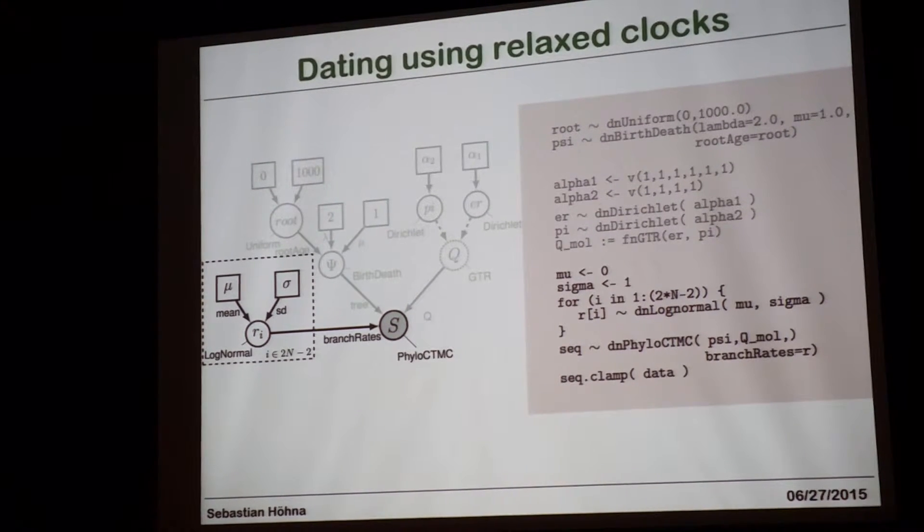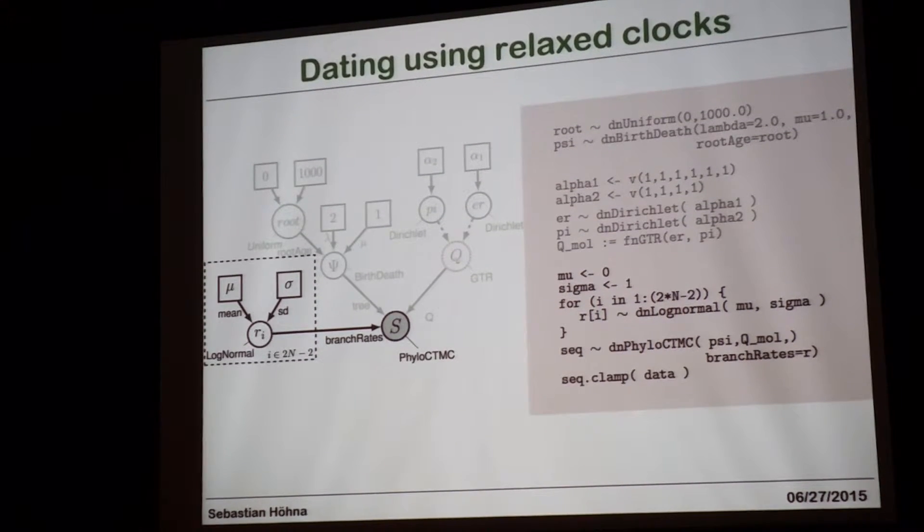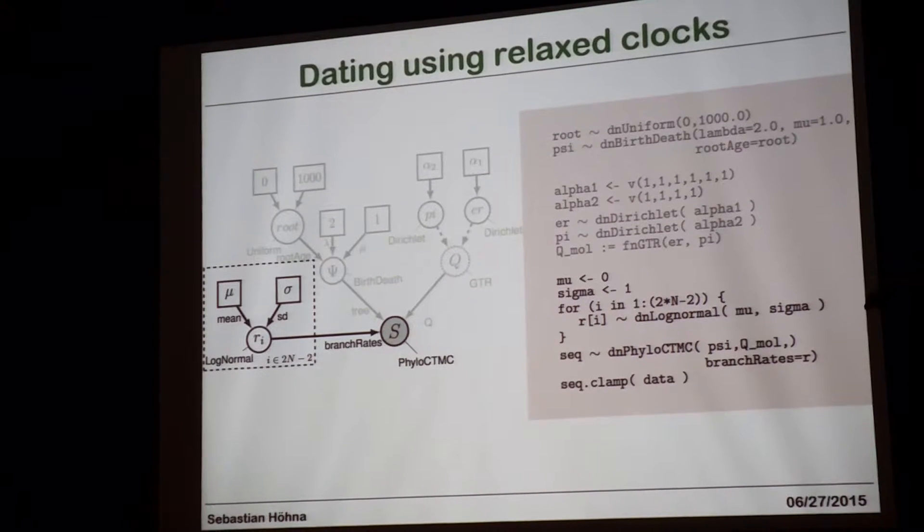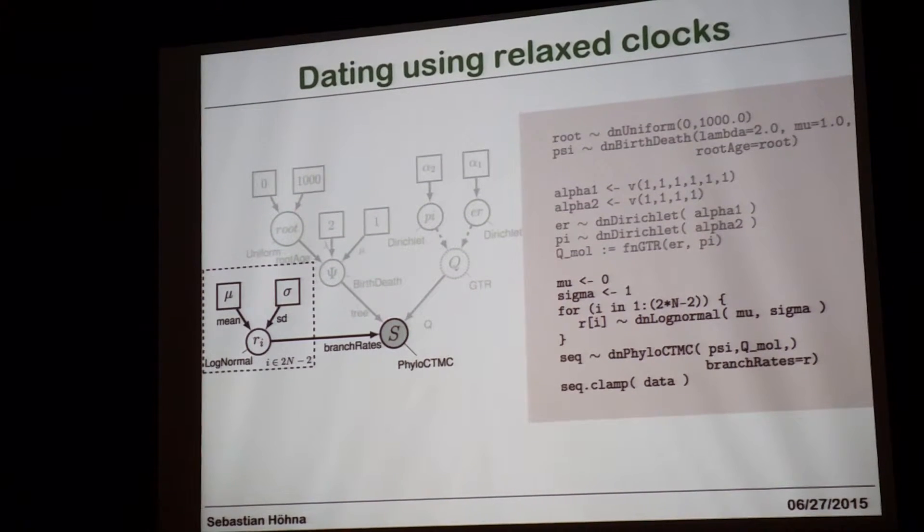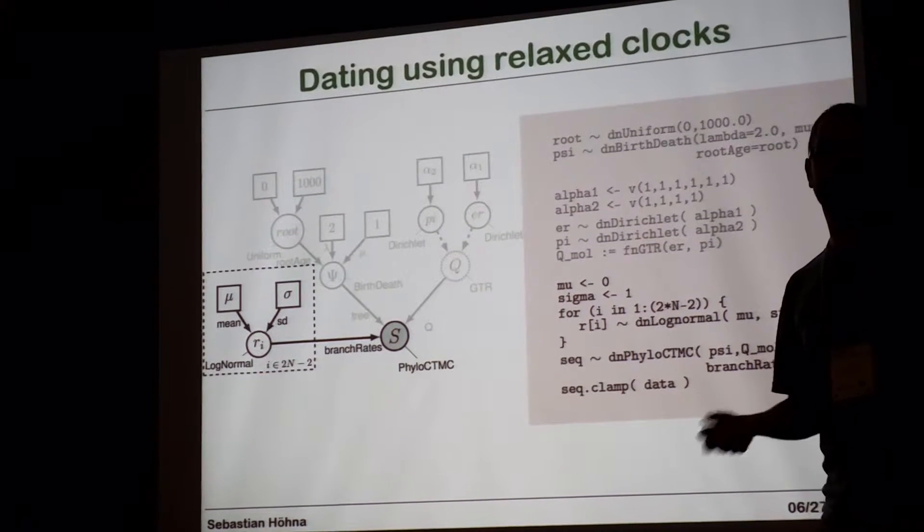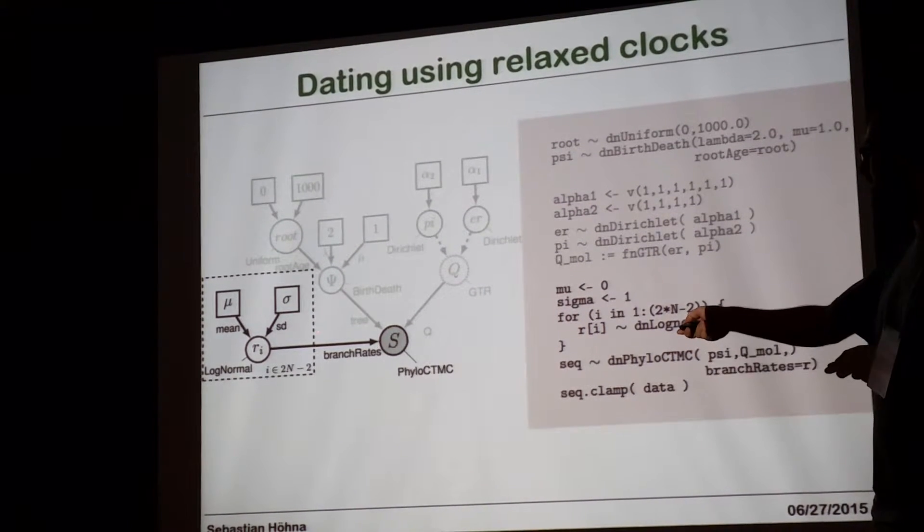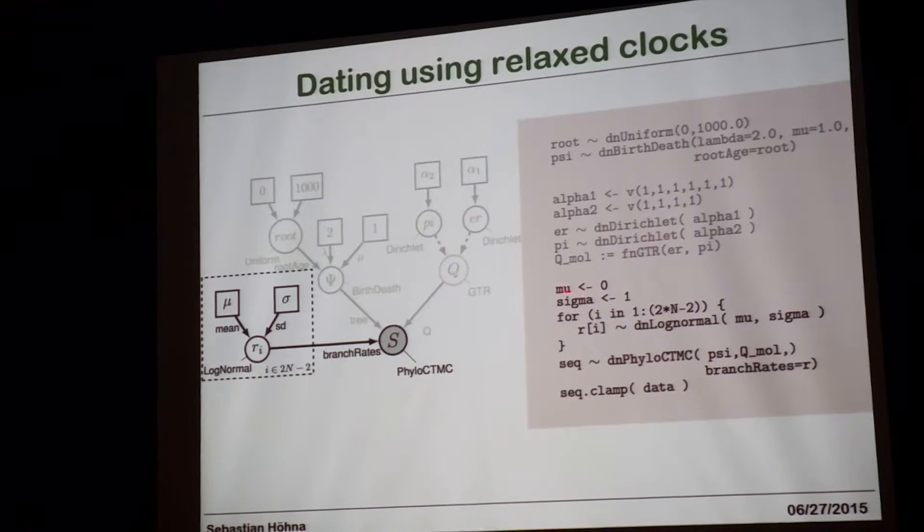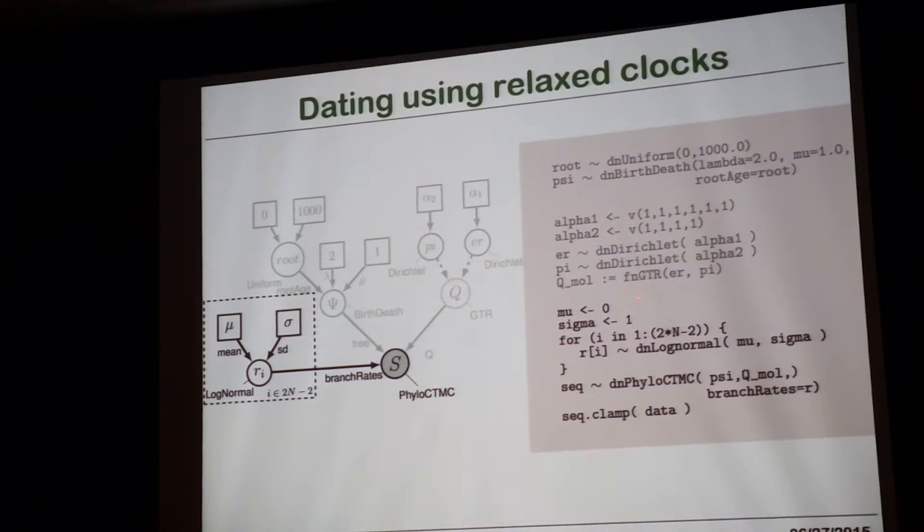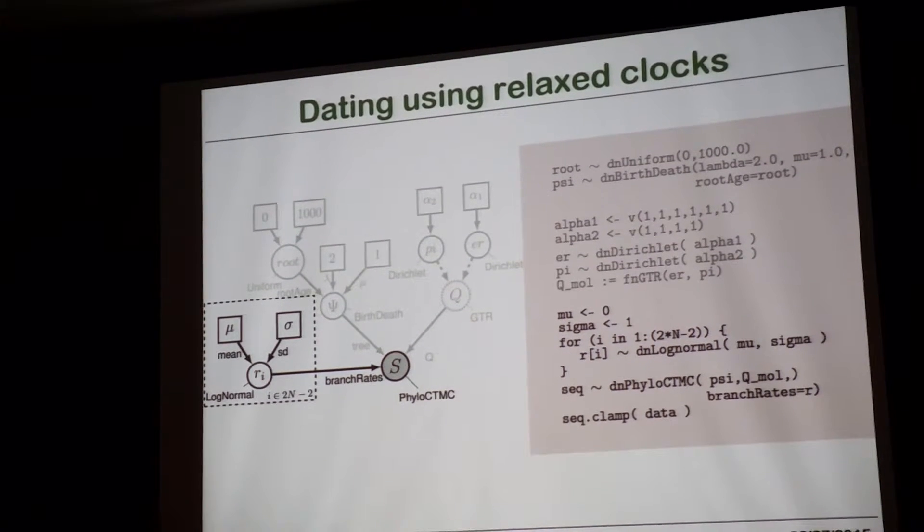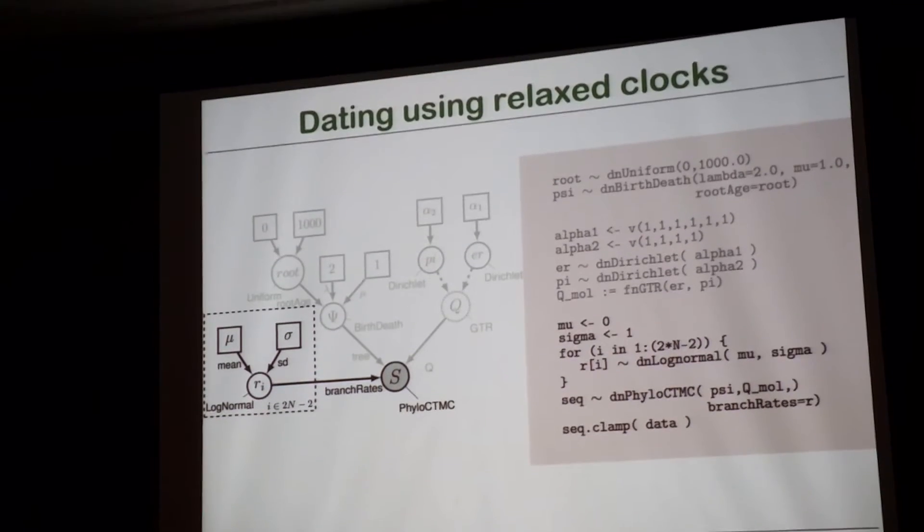The last model that I want to show you as an example here is a relaxed clock model, and how you can set up a lot of different relaxed clock models. So let us assume, again, that we just have a single gene. So all parts here, the prior distribution on the species tree are the same, and we have just the single GTR model over here. But now, instead of assuming that I have a 0.01 clock rate for my entire tree, I'm actually saying that I have 2n-1 different branch rates. So 2n-1 because every single branch has its own branch rate. And I say that they are drawn from a constant mean parameter and a constant standard deviation. So here I'm setting the mean parameter with the left arrow, so a constant assignment, setting it to 0, and then the sigma, the standard deviation parameter, to 1. And then I create for every single branch rate, I draw the rate parameter from a log-normal distribution.